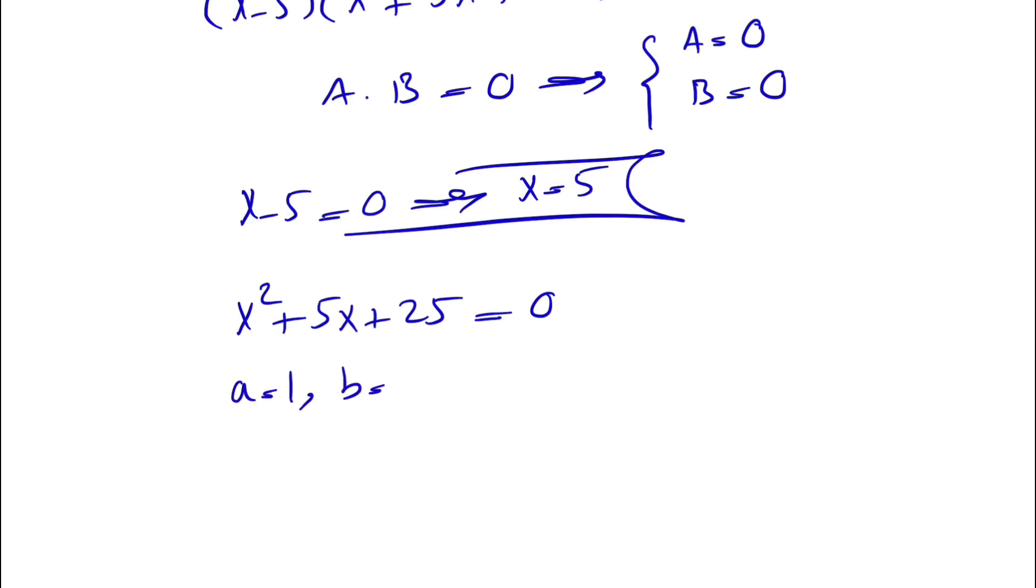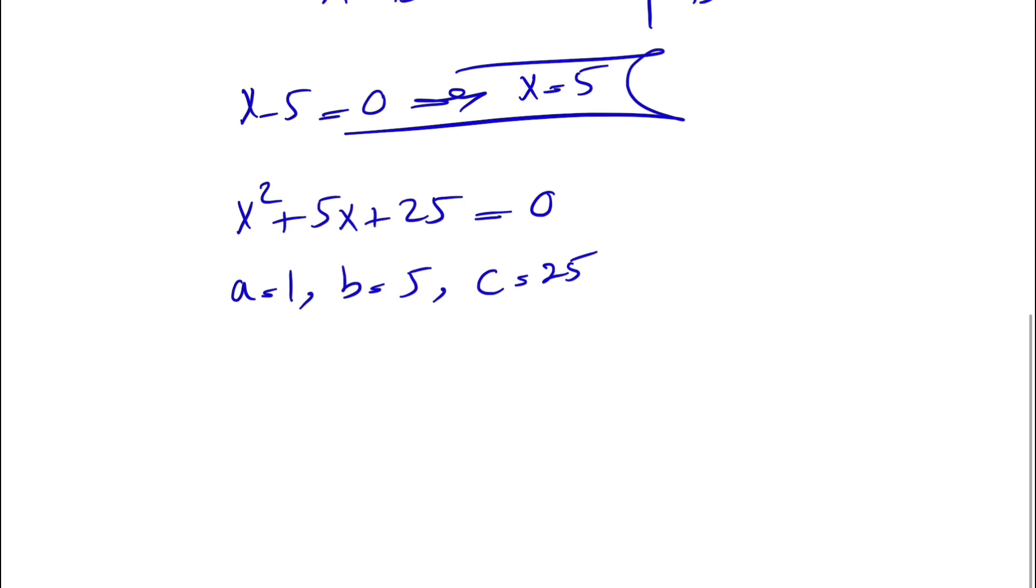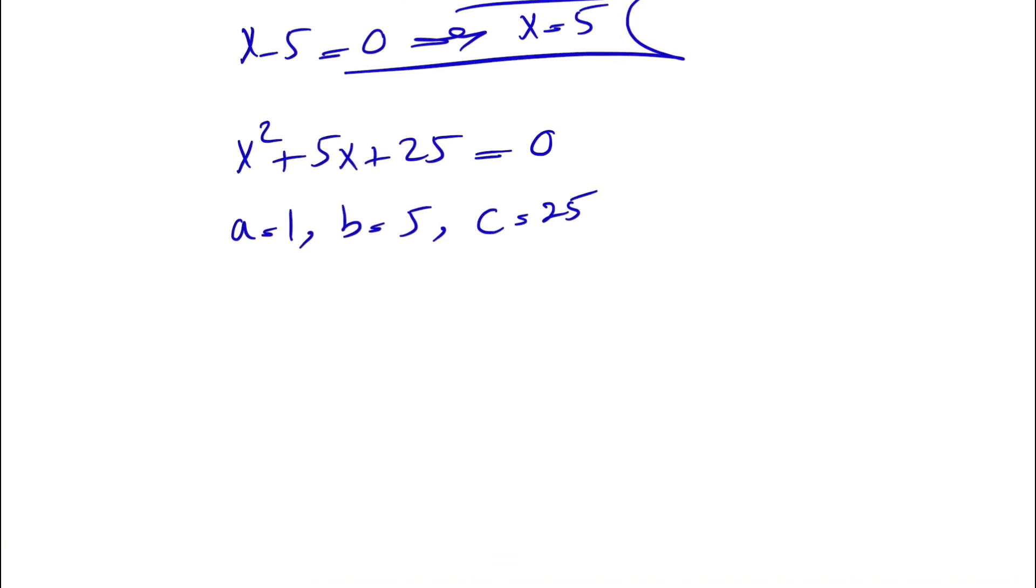And we have x squared plus 5x plus 25 is equal to 0. We'll use the quadratic formula: x equals negative b plus or minus the square root of b squared minus 4 times a times c, divided by 2a.